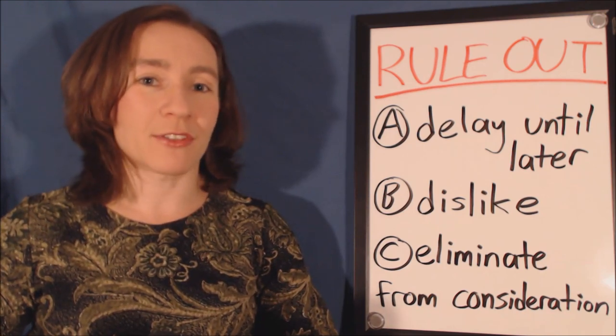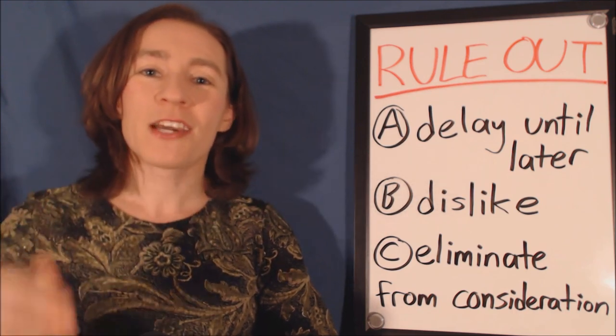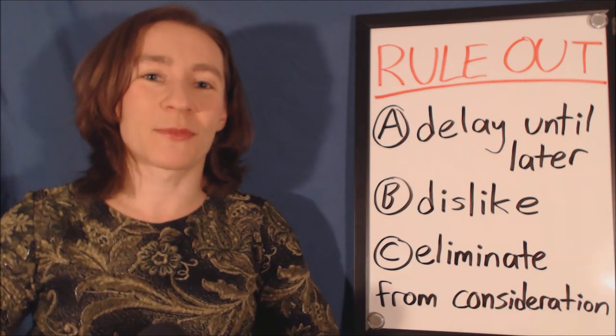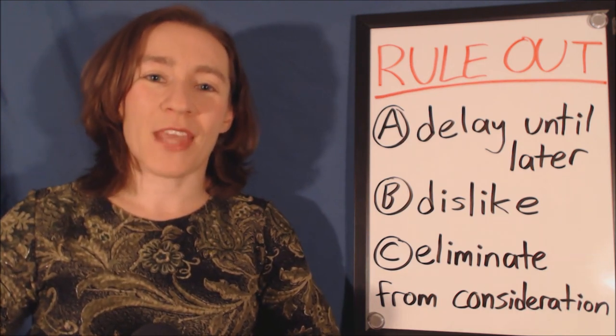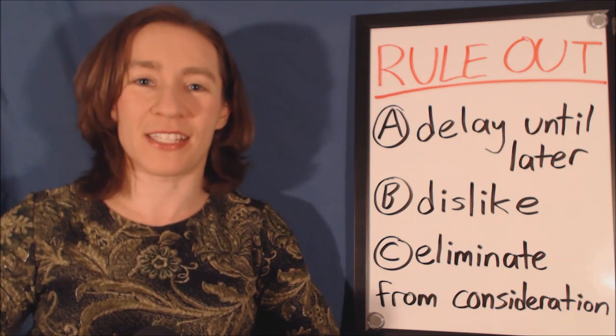And then seven more of the houses were too far away, so we also ruled them out. We eliminated them. We're not considering those houses as possible options. So out of 20 houses, we ruled out 12, and that leaves eight houses for us to visit.